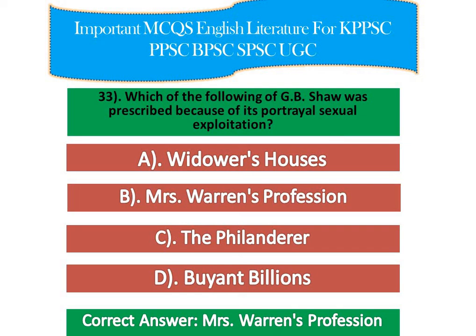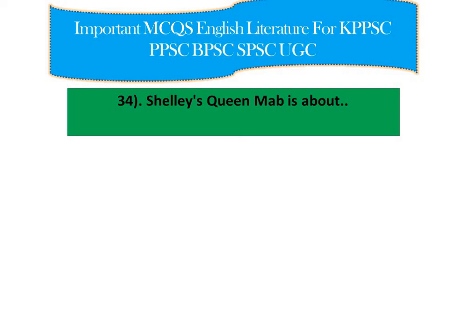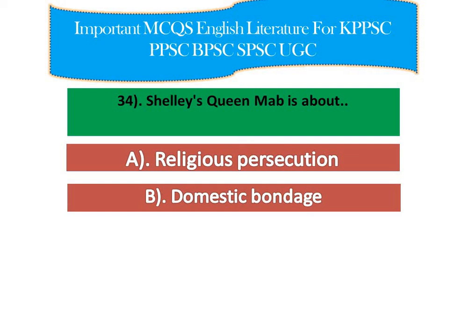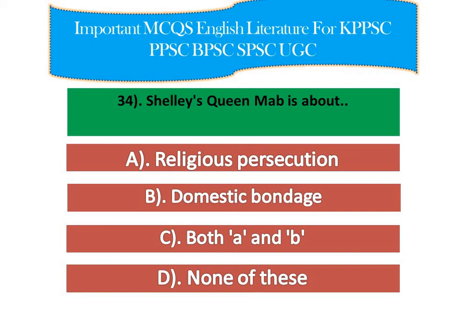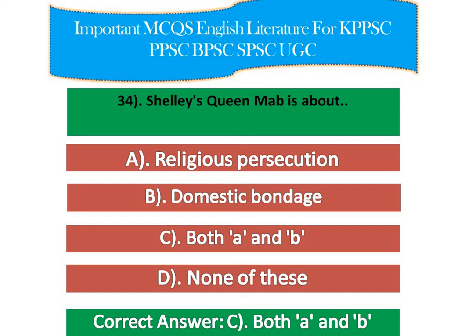Question number 9: Shelley's 'Queen Mab' is about — option A: religious persecution, option B: domestic bondage, option C: both A and B, option D: none of these. The right answer is option C — both A and B. 'Queen Mab' is a philosophical poem written in nine cantos, published in 1813.